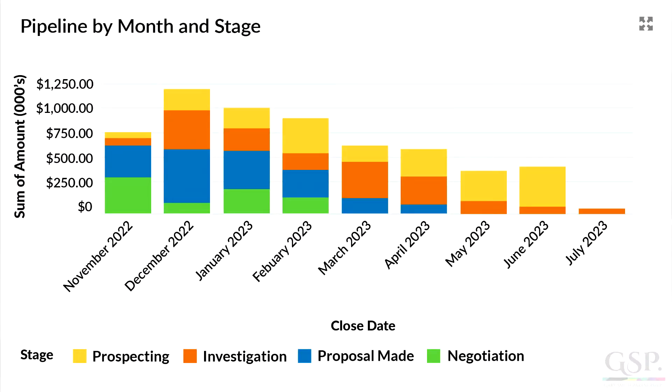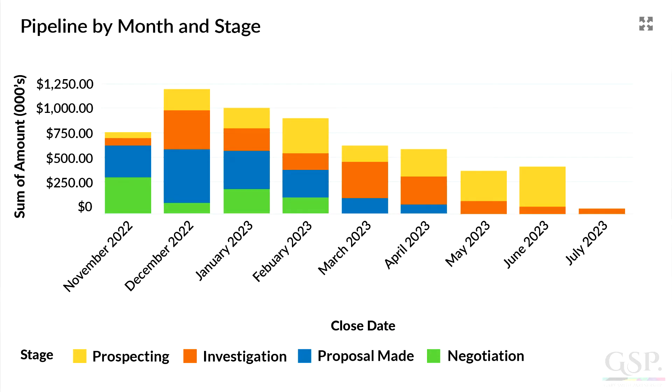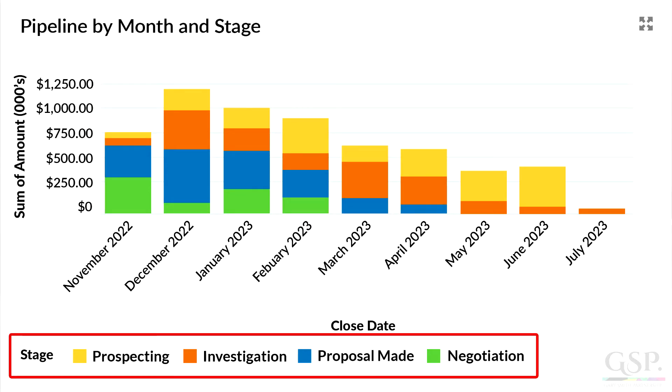Why are opportunity stages so critical? Well, the reason is they are fundamentally important to pipeline visibility, to revenue forecasting and sales management. For example, have a look at this dashboard chart. The chart shows the current pipeline, summarised by close date, opportunity amount and opportunity stage.